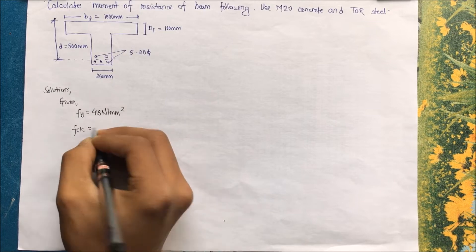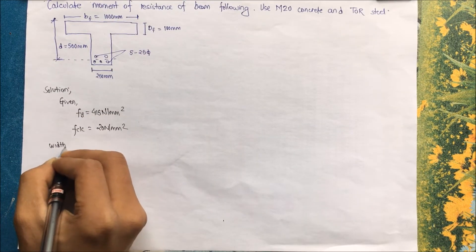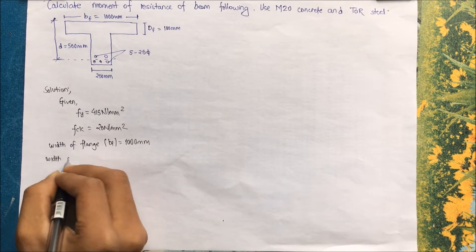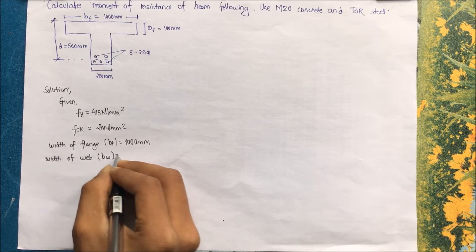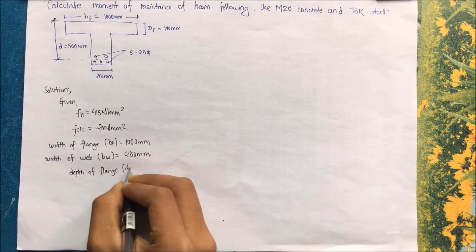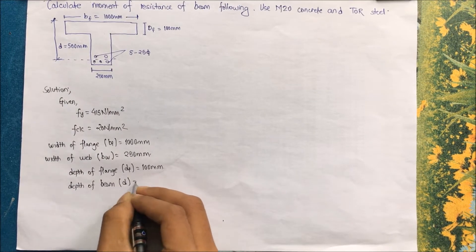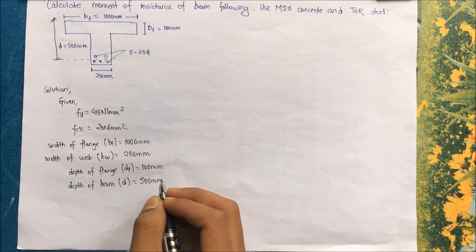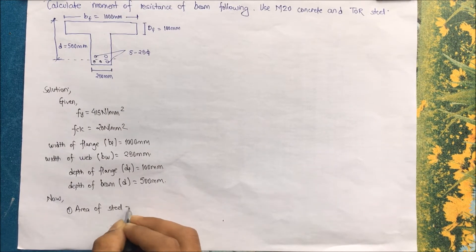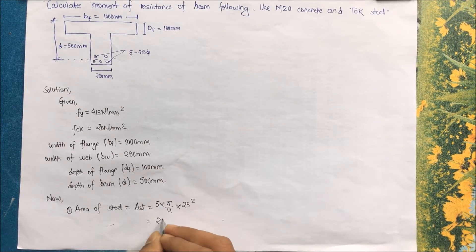The given data: FY, the yield strength of steel, is 415 N/mm² for Tor steel. FCK is given as 20 N/mm². For the flange section, the flange width BF is 1000 mm, the web width BW is 250 mm, the depth of flange DF is 100 mm, and the effective depth D is 500 mm. The area of steel AST equals 5 × (π/4) × 25², which comes to 2454.36 mm².